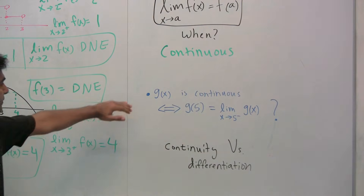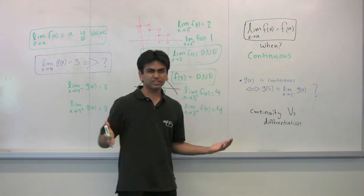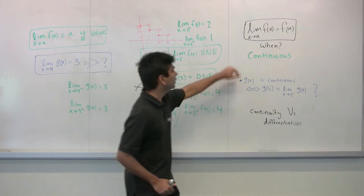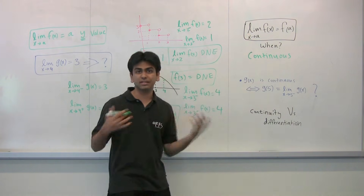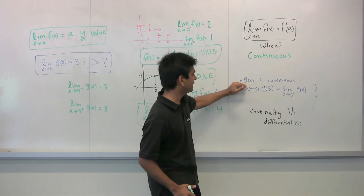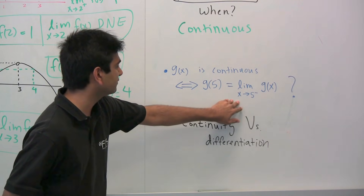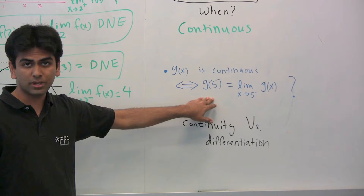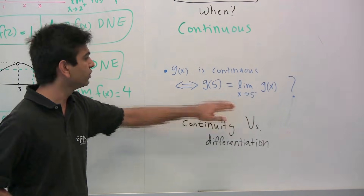Now, if you're given a question like: if g of x is continuous, does that imply that the limit as x approaches 5 from the left of g of x equals g of 5? Well, if we know g is continuous, we know the limit equals the y-value, and if the limit exists it equals both the left and right-handed limits. So clearly the left-sided limit also equals the y-value if the function is continuous — this implication is true. But the other way around is not true: just because the left-sided limit equals the y-value, what if the right-sided limit doesn't? Then the overall limit won't exist, and the reverse implication fails.